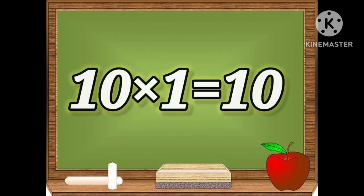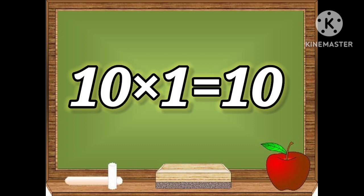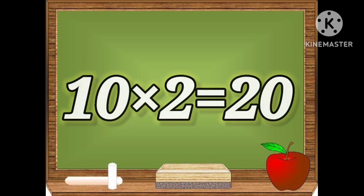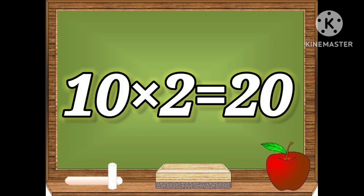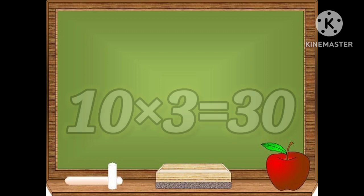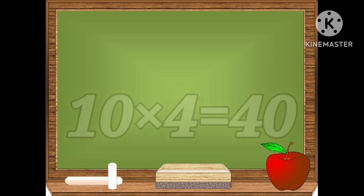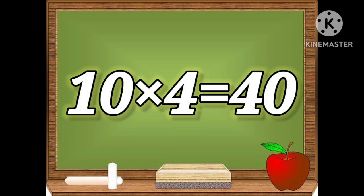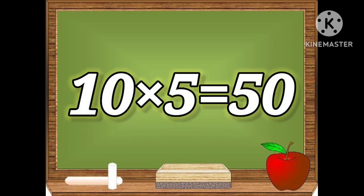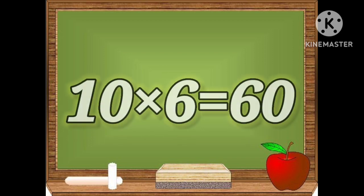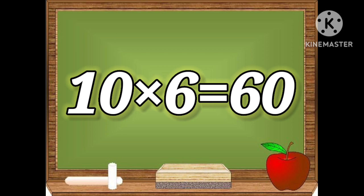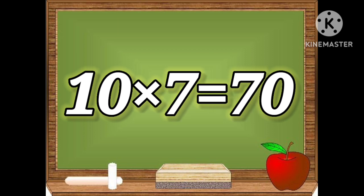Ten ones are ten. Ten twos are twenty. Ten threes are thirty. Ten fours are forty. Ten fives are fifty. Ten sixes are sixty. Ten sevens are seventy.